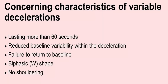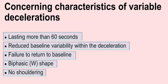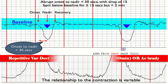The concerning characteristics of variable decelerations include: lasting for more than 60 seconds, having reduced baseline variability within the deceleration, failure to return to baseline, biphasic or W-shape, and no shouldering.